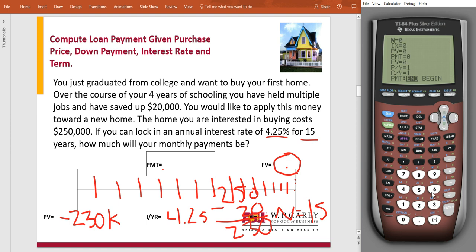So N is 15, but we're trying to figure out monthly. So we're going to have to go 15 times 12, and that's going to be 180 months. Our I is 4.25, but once again, that needs to be monthly, so we have to divide that by 12. Enter. Our present value is $230,000.